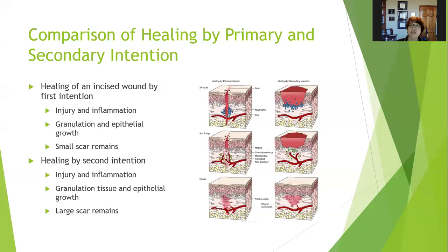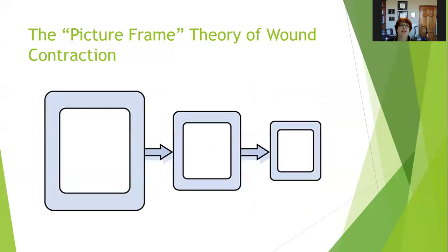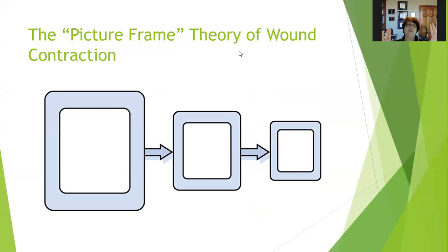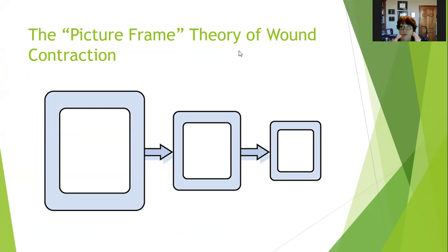With secondary intention, the scar itself contracts by the picture frame theory of wound contraction. With an incised scar that's sutured together it heals pretty easily, but a bigger scar healing by secondary intention — the whole thing has to contract in order for the wound to get smaller. It's like zooming in on a picture to make it smaller all the way around; the edges don't just go together.